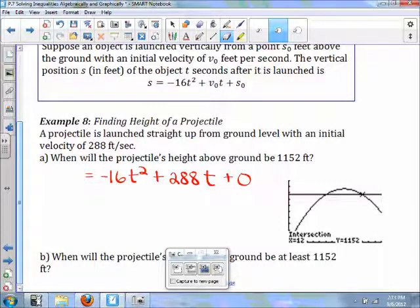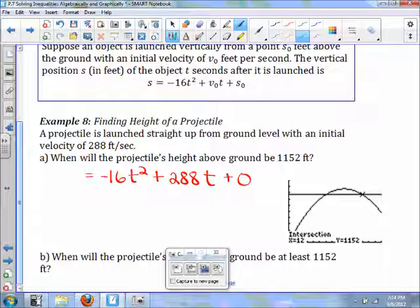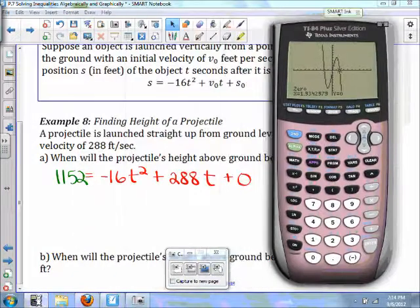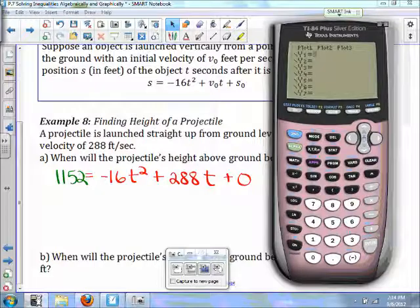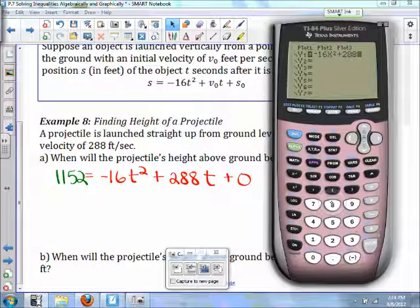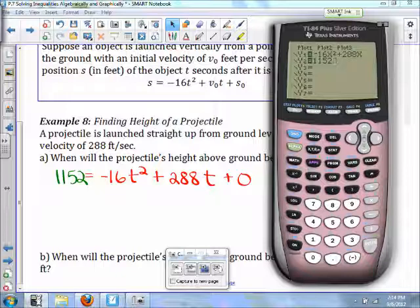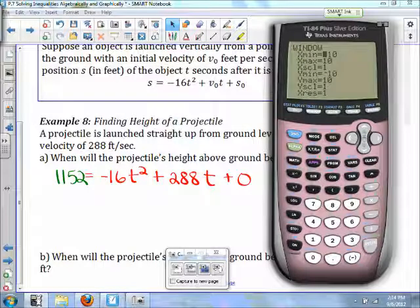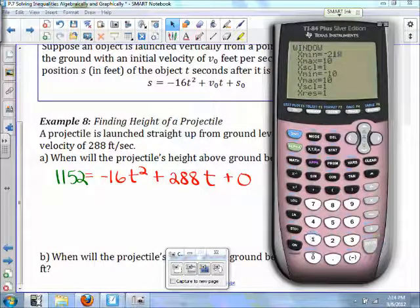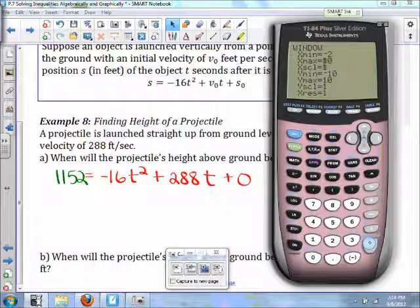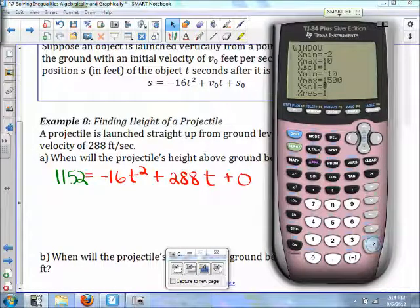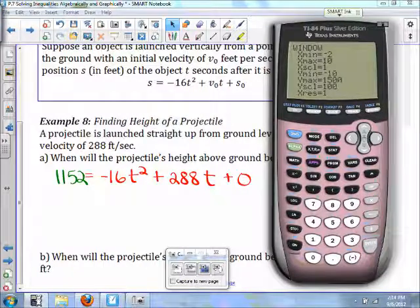What we are going to do, we're going to change this S to 1152. So what we can do here, we can solve this equation using intersections. So we put Y1 as negative 16 X squared plus 288 X. Y2 is going to be 1152. Change our window a little bit. We'll go negative 2 to say 10. Then we can go negative 10 to say 1500 feet. Why do we go 1500? We want it above the 1152 feet.